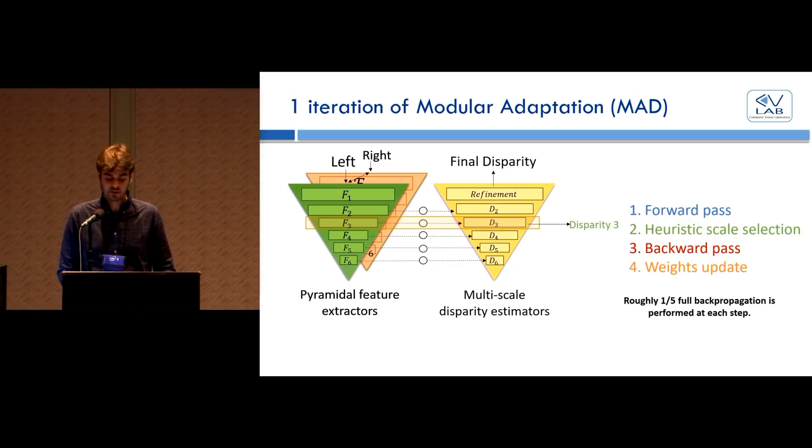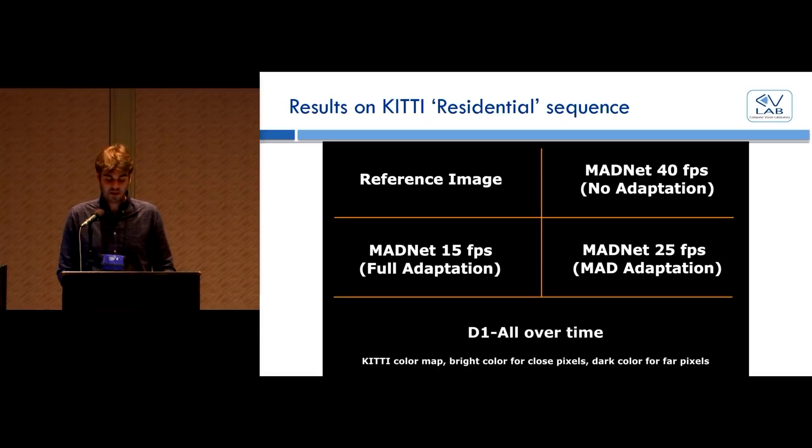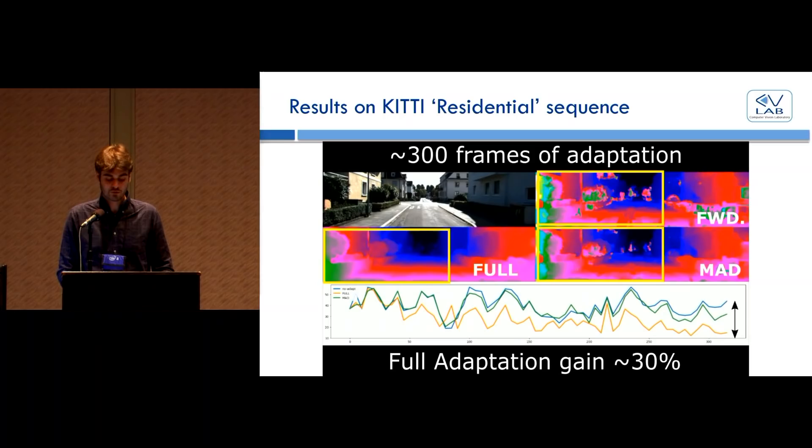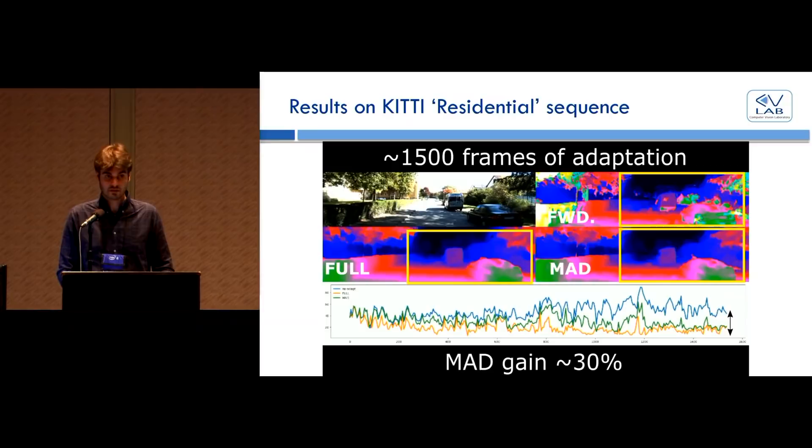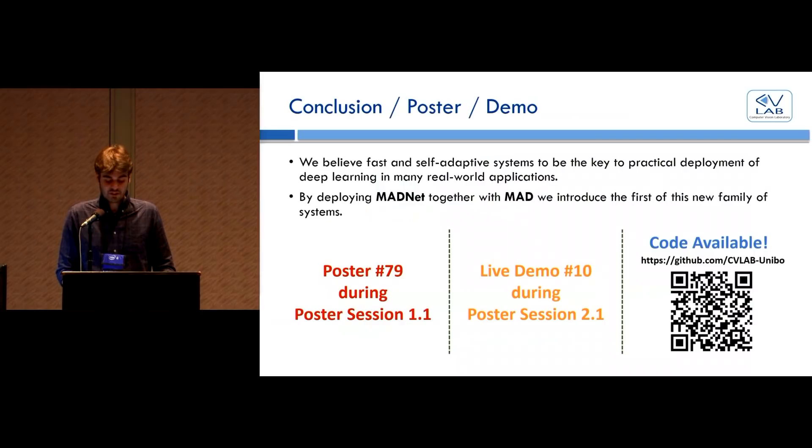The following video shows the results we obtain in adapting online MADNet pre-trained on synthetic data to a real environment without any kind of supervision. From top to bottom, left to right, we show a reference image, the prediction of the network trained on synthetic data, fine-tuned online with full backpropagation, and with MAD. Finally, at the bottom, we report a plot of the percentage of wrong pixels versus the number of processed frames. We can see after a few hundred frames, the full adaptation is already able to drastically reduce the error, improving the performance by roughly 30 points in a few hundred steps. Due to its approximated nature, MAD requires more training steps, but given enough iterations is able to catch up. At around 1,500 iterations, it obtains a similar gain in terms of performance. The plots show how given enough adaptation steps, the two strategies even out, but MAD provides still 10 frames more per second.